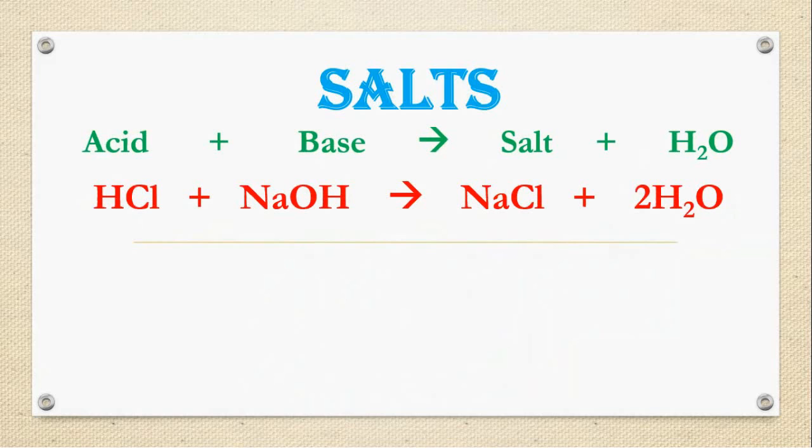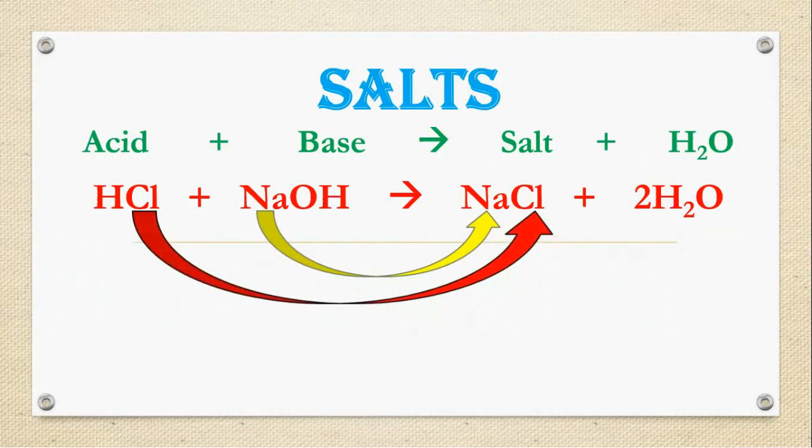Let us take one example. HCl hydrochloric acid, NaOH that is ending with OH, it is a base. Sodium hydroxide gives salt, NaCl and water. You see, from base sodium is displaced. From acid chlorine is displaced. Like that, salt is produced.